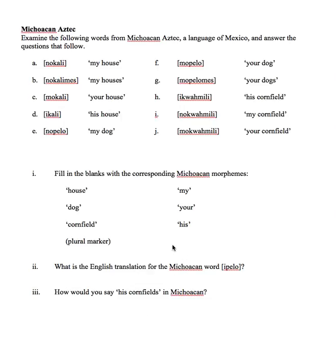Part two will require us to have done part one first. Once we've done part one, we can do the question where we have to figure out the English translation for the phrase 'y pelo.' And then we do the exact opposite activity for part three, where we take a phrase in English like 'his cornfields' and translate it into this language. This is Michoacan Aztec, which is a dialect of Aztec, or Nahuatl as it is often known — a Uto-Aztecan language spoken in Mexico. A lot of people think of Aztec as just a dead language, but Michoacan Aztec actually has a few thousand speakers in Mexico.